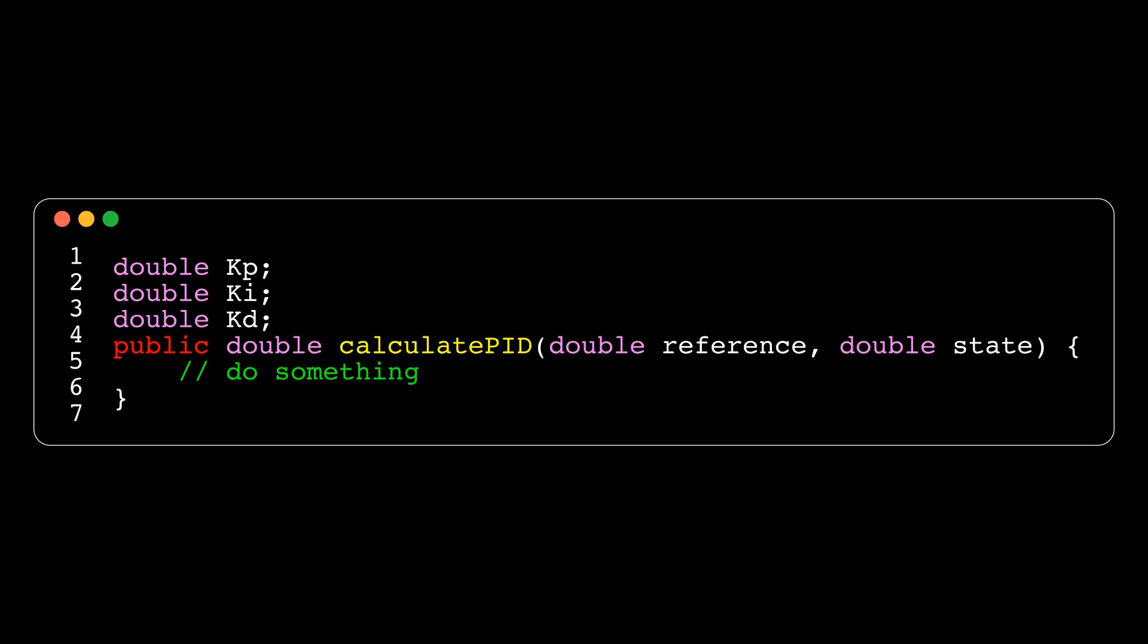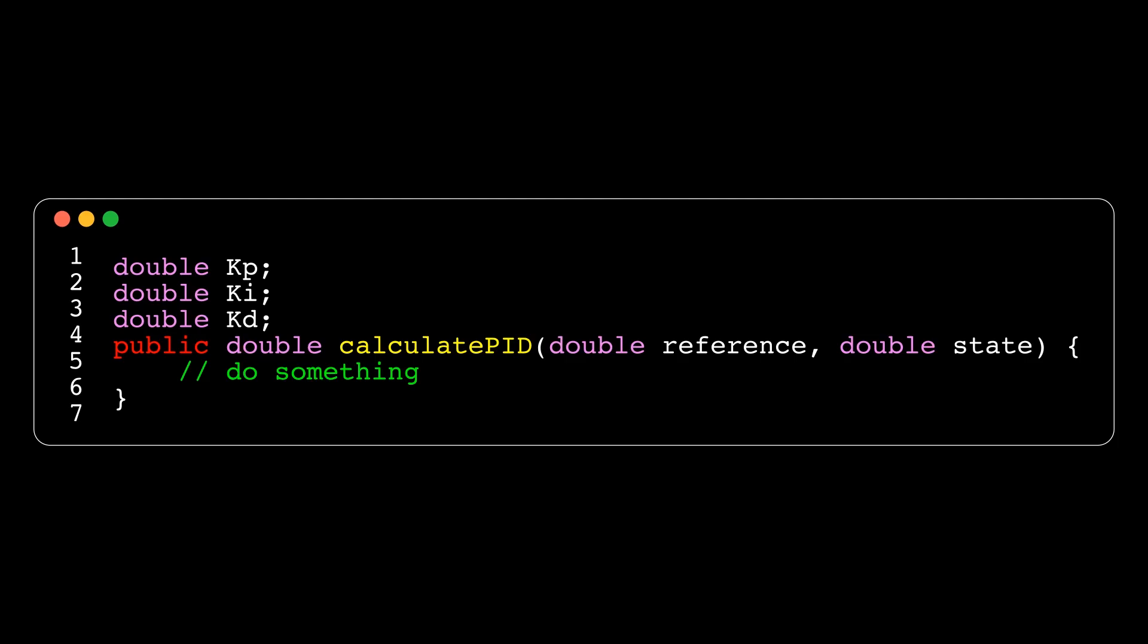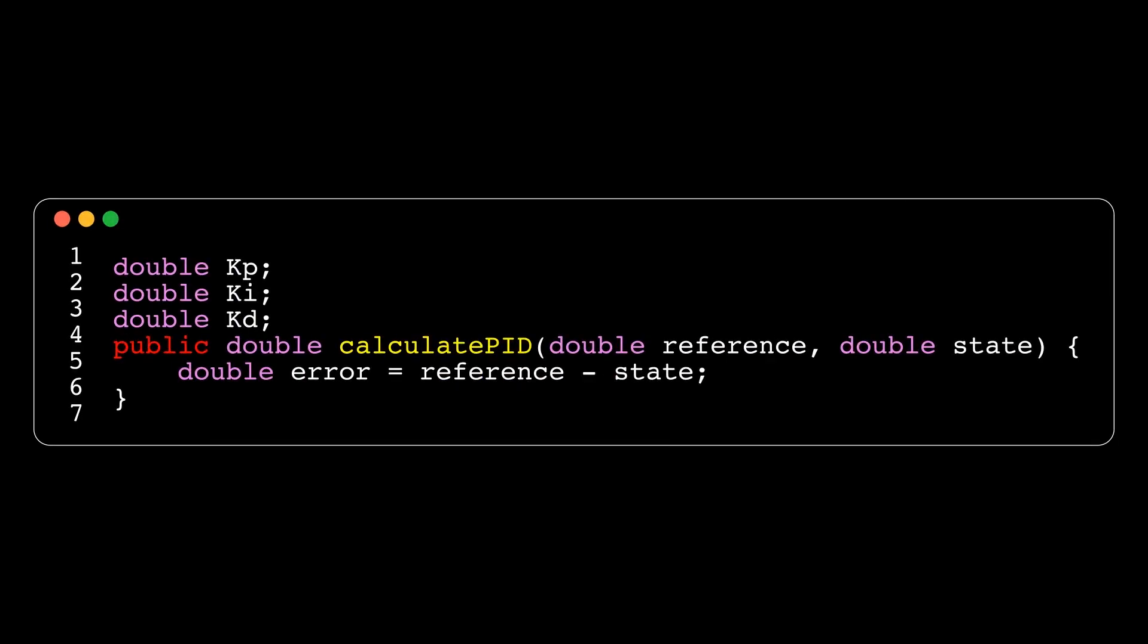Now we can create the function that we call periodically. This function takes in two parameters: the reference or target state and the measured state. We can then calculate our error from our system's desired reference state and its current measured state.